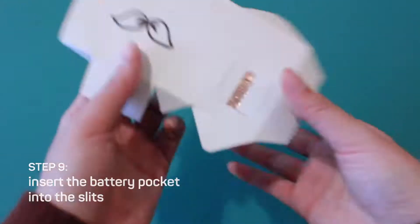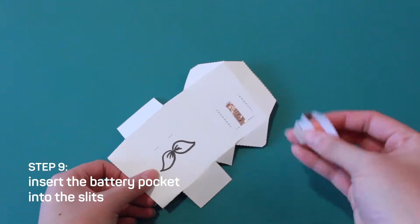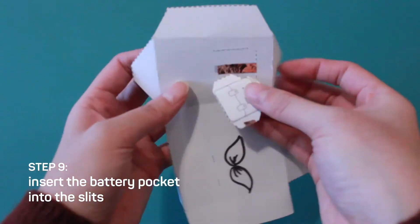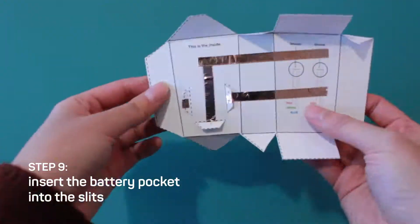Step nine, flip over your template. Insert the battery pocket into the slits, then turn it over again.